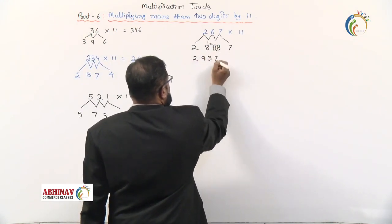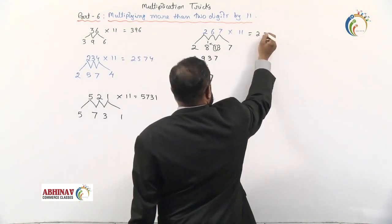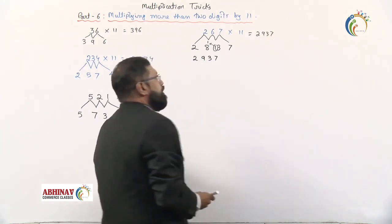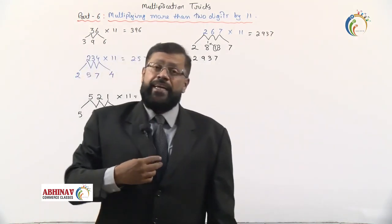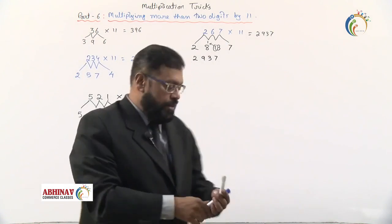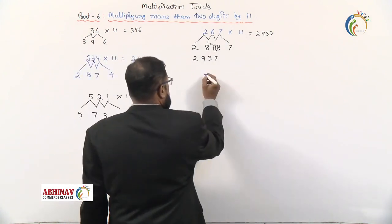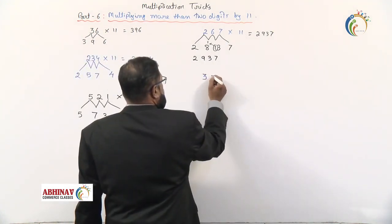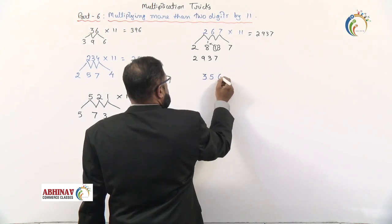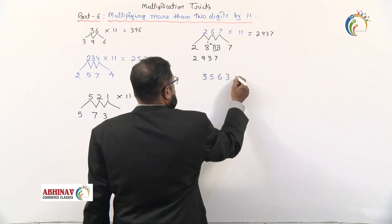This is what you should understand: when you get the addition of two digits, don't write two digits. One more example: say it is 3563, we have to multiply this by 11.